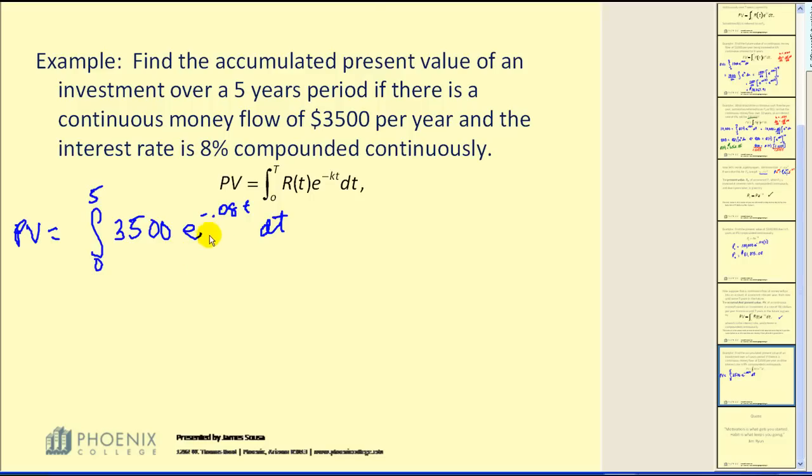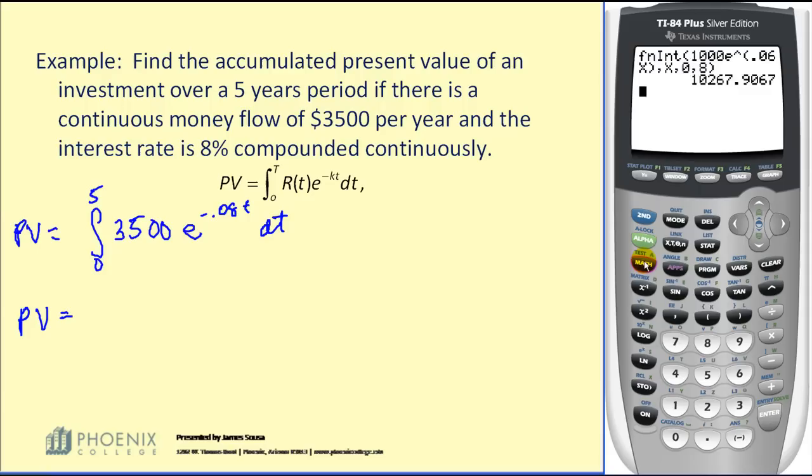Now I've already done a couple of these that require the use of substitution. For the sake of time, I'm going to go straight to the calculator to get the value of this definite integral and then interpret the results. Math nine brings up the definite integral command. This comes out to $14,423.50.